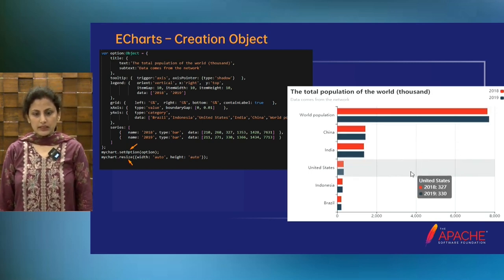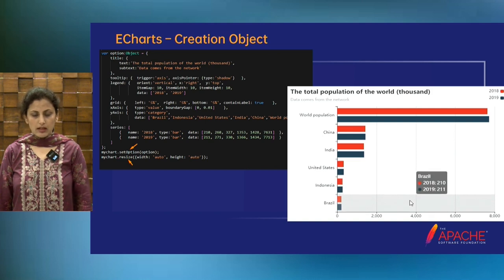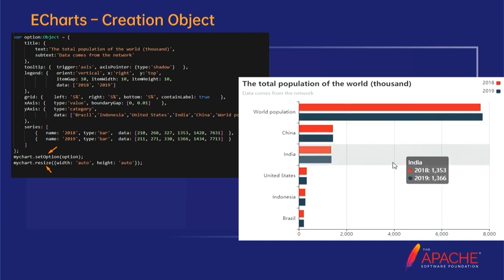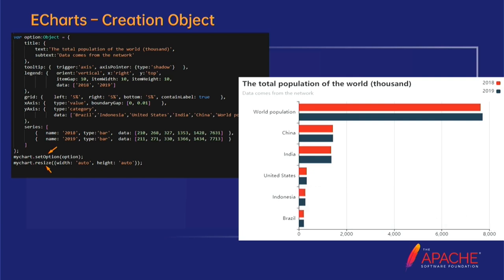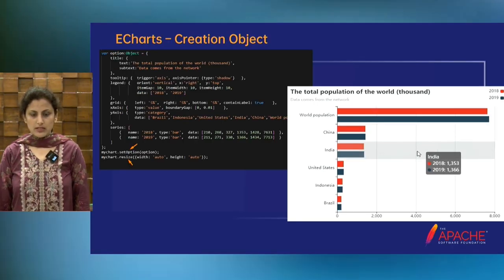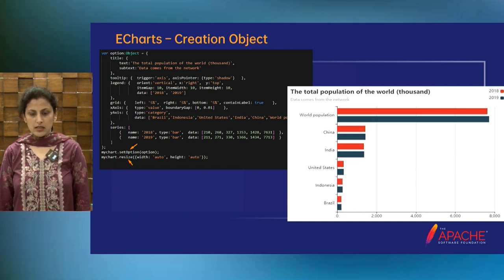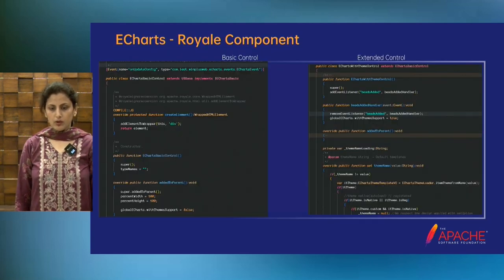If you see that we have the text area — if there is a developer who knows JavaScript, they can easily embed that JavaScript code in Apache Royale. We do not have to modify any element in any way. It works as it is, just like it was working before in JavaScript. For this implementation, we just set the option and make it auto-resize, and then the chart is created accordingly.